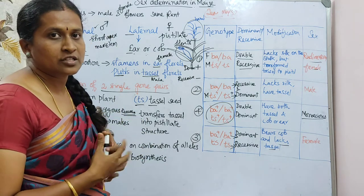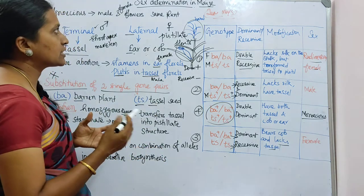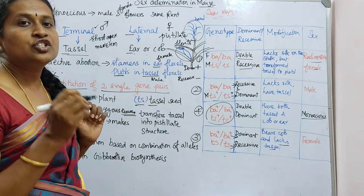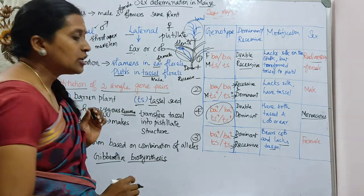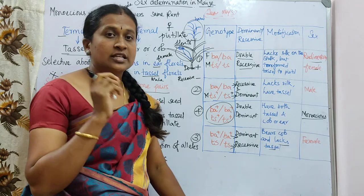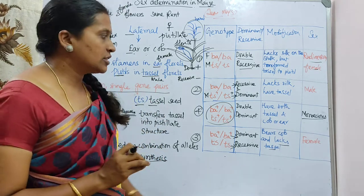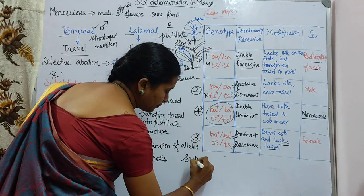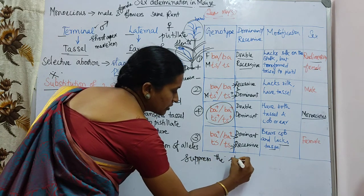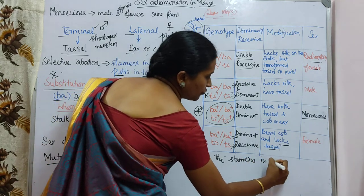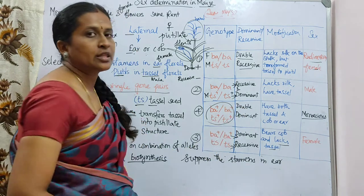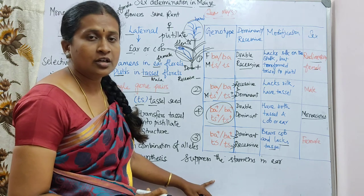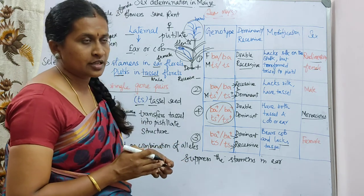Another important point regarding sex determination in maize is mutation in gibberellin biosynthesis. This mutation suppresses the stamens in the florets of the ear, which plays an important role in sex determination in maize.